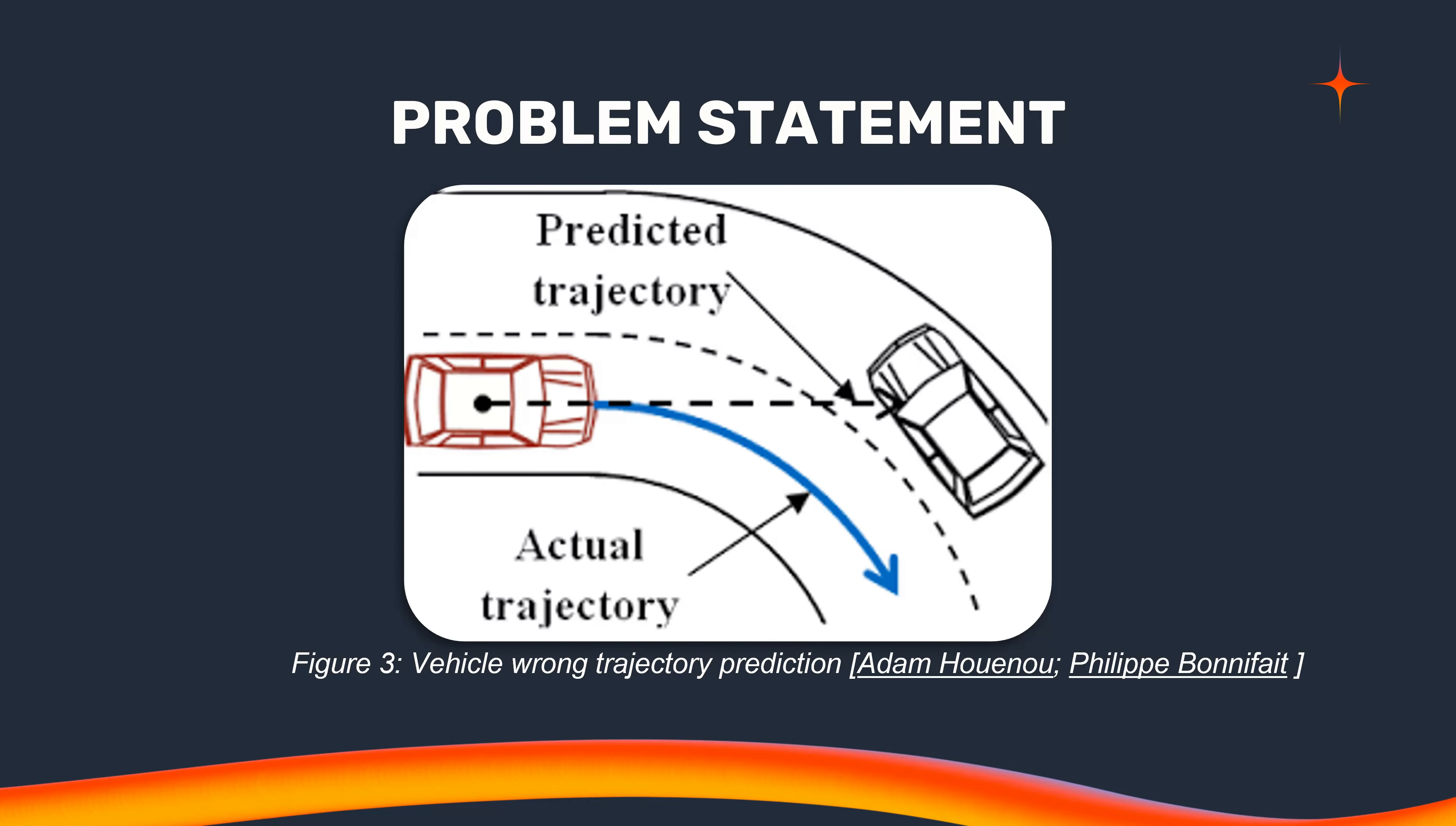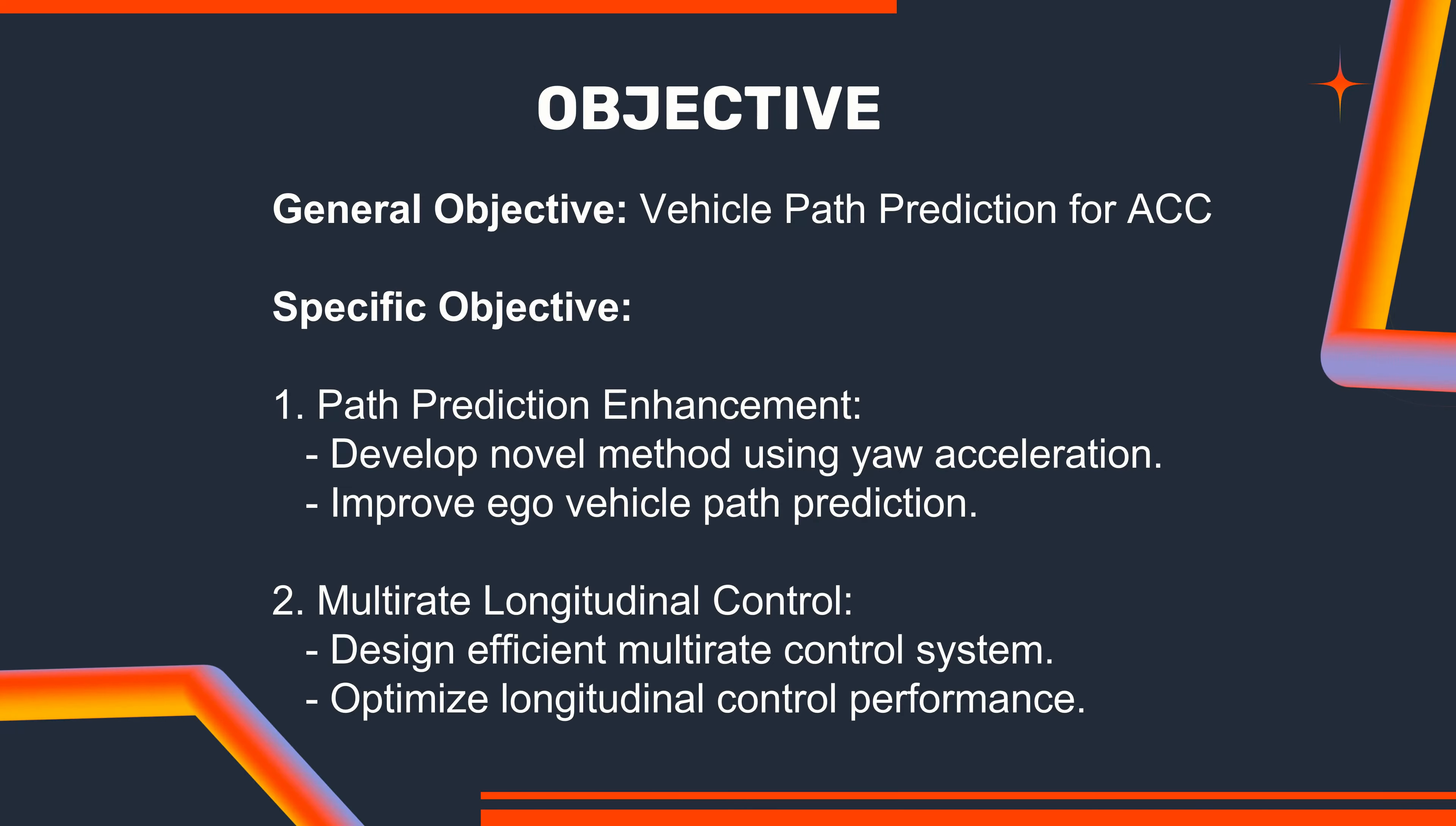In traditional approaches, ego vehicle path prediction faces steep challenges on curvature roads due to reliance on IMU-driven yaw rates and longitudinal velocity. This leads to potential errors, especially at inflection points, where a neighbor lane vehicle might be inaccurately selected as CIPV.